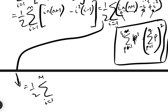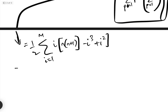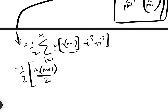Now we put in the formulae for all of these. The sum of the first m natural numbers is m(m+1) over 2, multiplied by the constant n(n+1). The sum of i cubed from 1 to m equals m(m+1) over 2, squared — that's the square of the sum of the first m natural numbers.